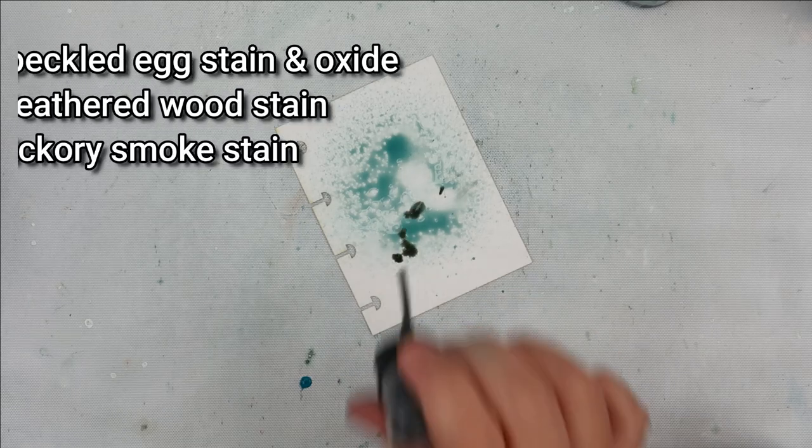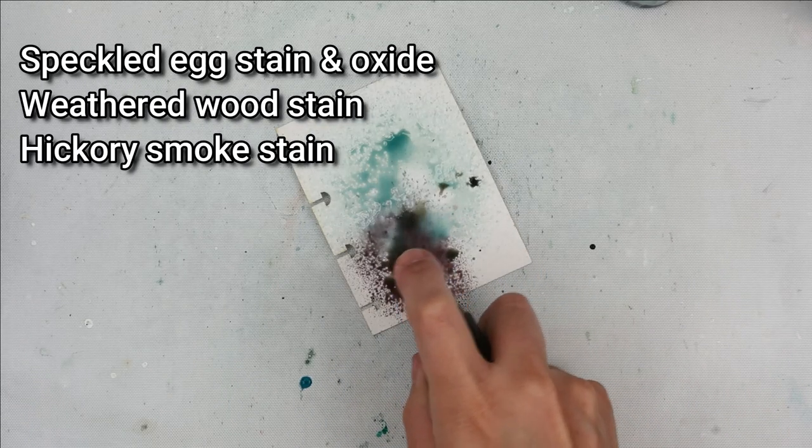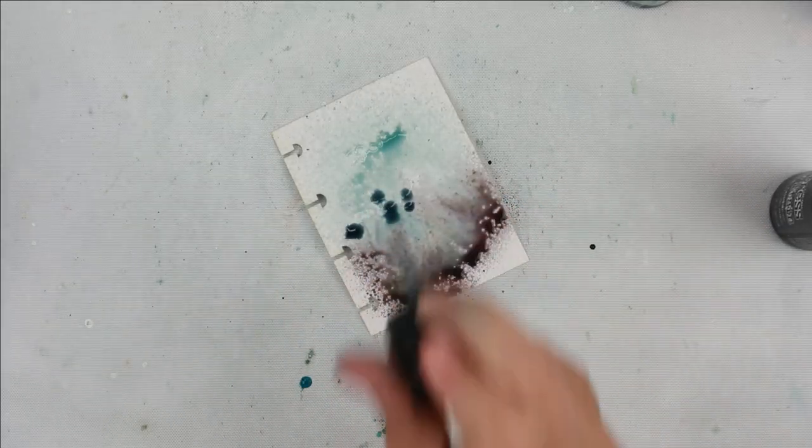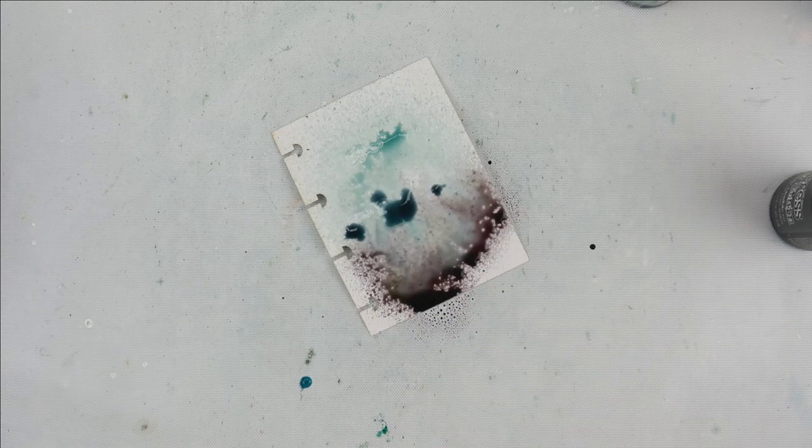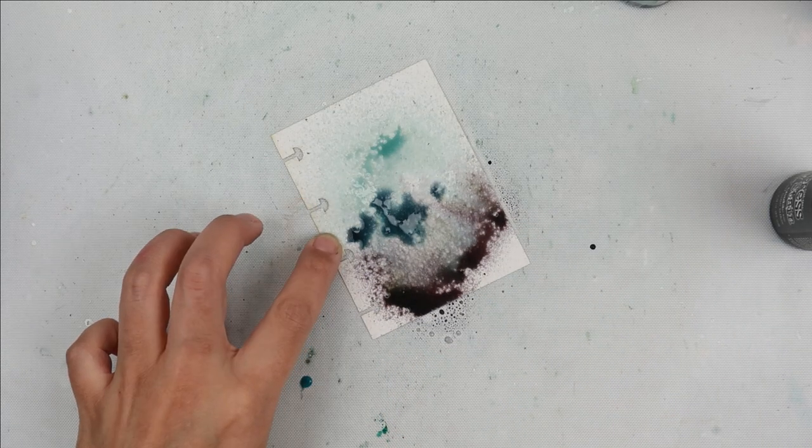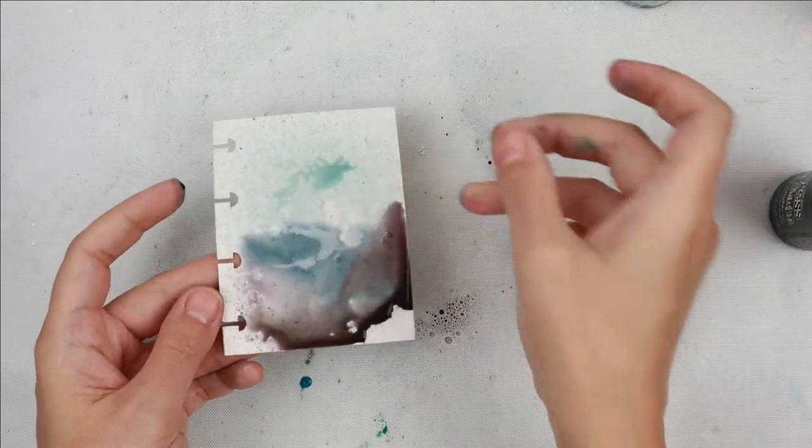This next combination I'm using Speckled Egg Spray Stain. I am splattering on some Hickory Smoke Spray Stain and then I ended up spraying it on. Then I'm going to take some Weathered Wood Spray Stain to add more depth and to break up the Hickory Smoke and the Speckled Egg so it kind of gives more of like an ombre effect.